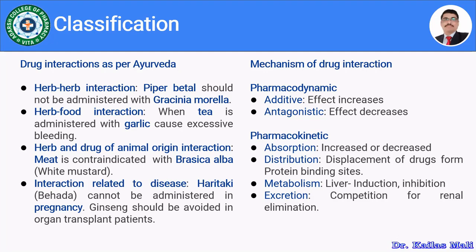Garlic is a part of food or drug. Herb with a drug of animal origin: meat should be contraindicated or not taken with Brassica alba, known as white mustard — this is a herb interacting with a drug of animal origin. Then, interaction related to disease: Haritaki or Beda cannot be administered to pregnant women. Ginseng should be avoided in organ transplant patients, because ginseng is an immune booster and there may be chances of organ rejection.